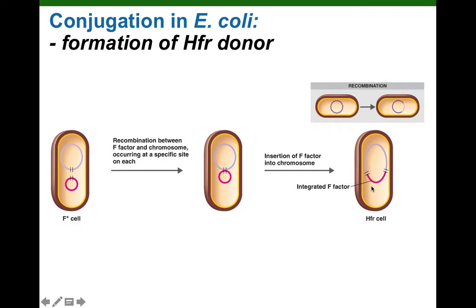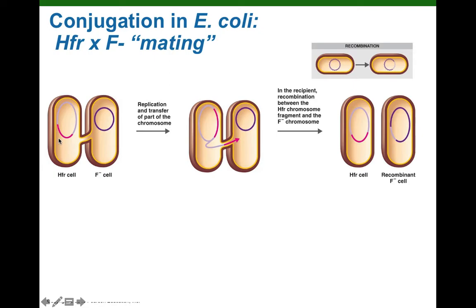HFR is when the F factor is integrated into the donor's chromosome, and this is an amazing donor because when it mates with a recipient, the donor can now transfer a copy of part of the chromosomal DNA to the recipient, which really increases genetic diversity. In the second mating, when the HFR cell is ready to transfer a copy of donor DNA to the recipient, the transfer starts about midway in the F factor. The chromosome, including the F factor, gets copied, and right at that point a copy of half the F factor leads the way, pulling a copy of the donor chromosomal DNA through the conjugation bridge into the recipient.